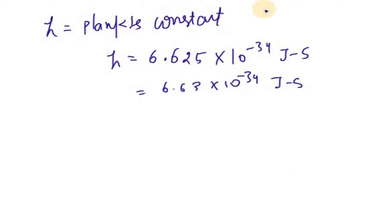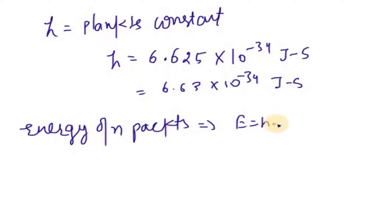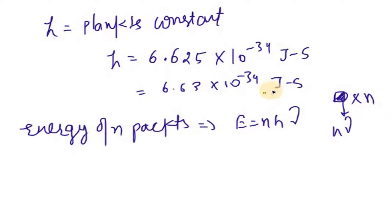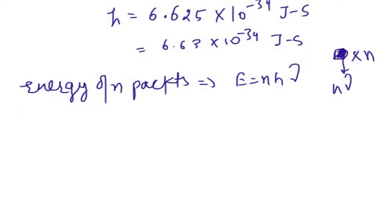The energy of one packet is E = Hν. If we have N number of packets, the total energy will be E = NHν, where we multiply the single packet energy by N. Here N must be an integer.